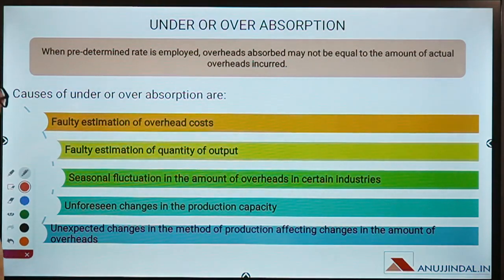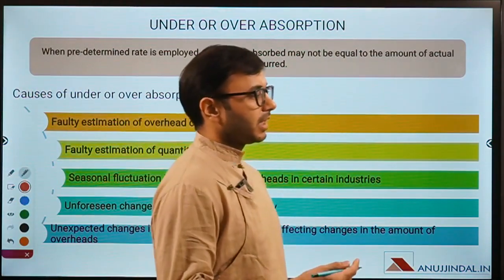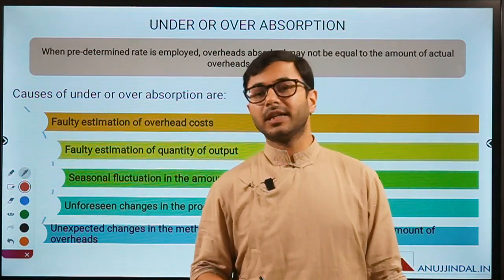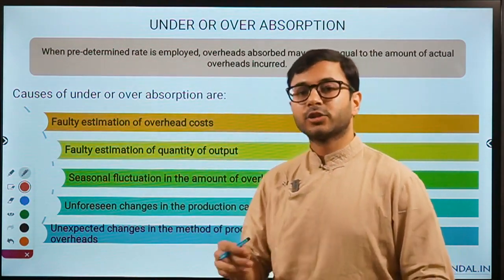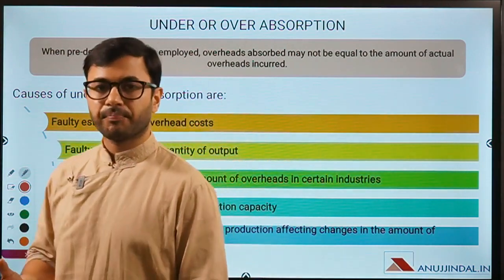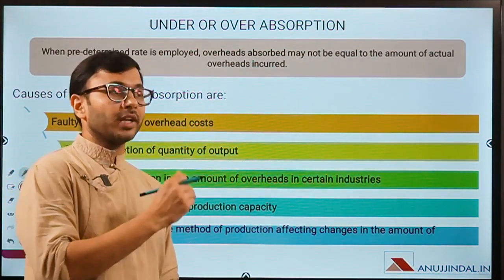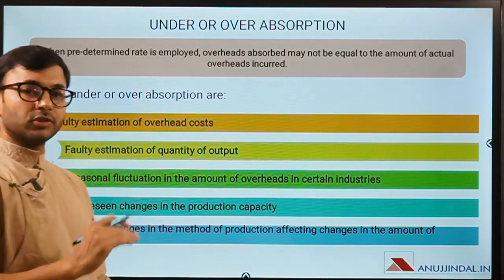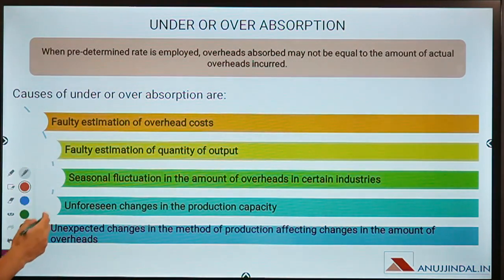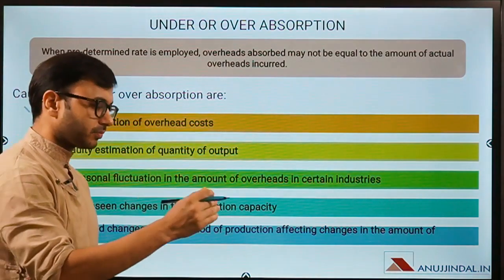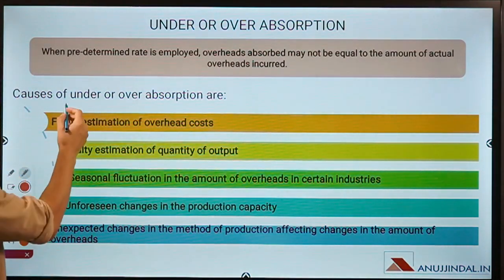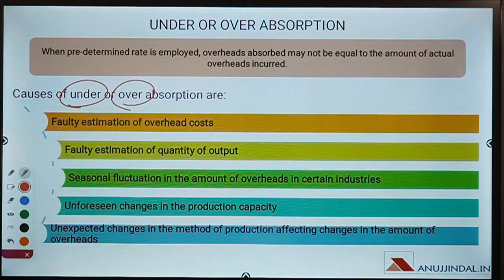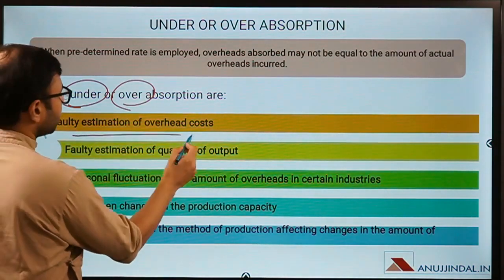When a pre-determined rate is employed, overheads may not equal the amount of actual overheads. For example, if you pre-determined rent expense to be rupees 7000 but the actual overhead expense was only 5000, there is over-absorption of 2000. There can be a difference between pre-determined and actual overheads, which results in either under or over absorption — in both cases you have to make the correction.